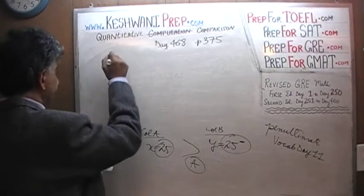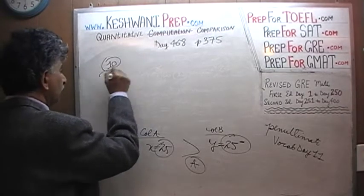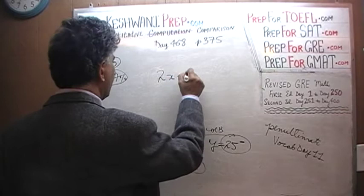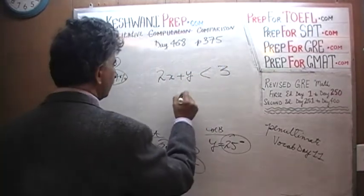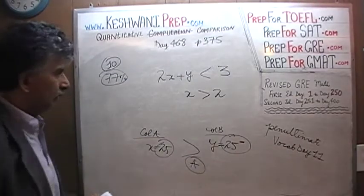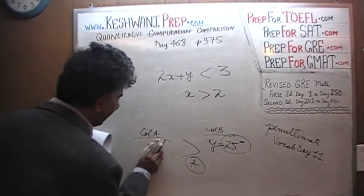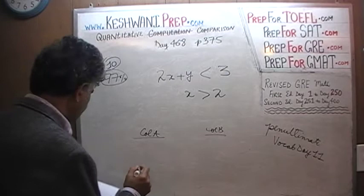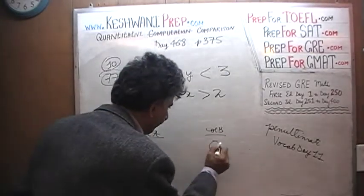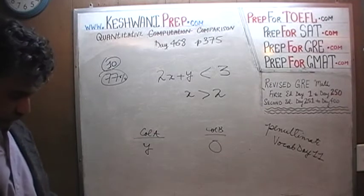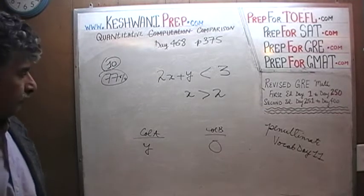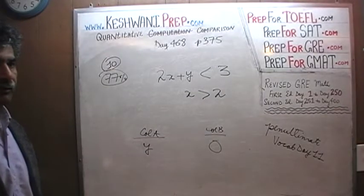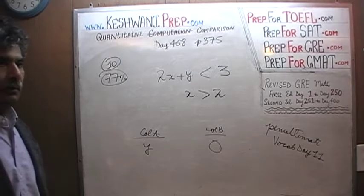Number 10. 77% of the people who took the exam had no trouble with it — about three quarters of the people got it right. We are told that 2 times x plus y is less than 3, and we are also told that x is more than 2. What we are being asked to compare is y versus 0. I will give you 5 seconds to do the problem yourself. It is a very simple, very straightforward problem.